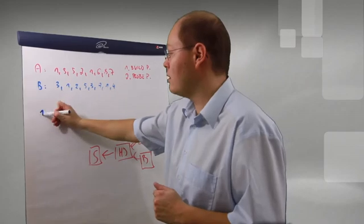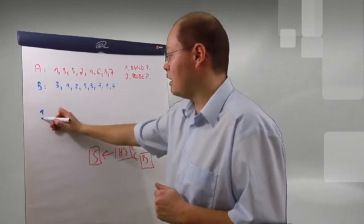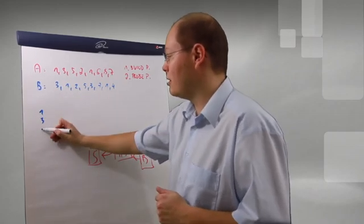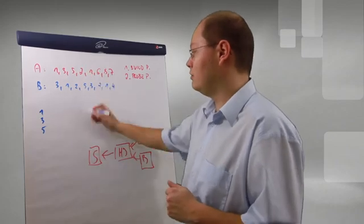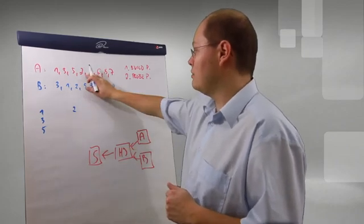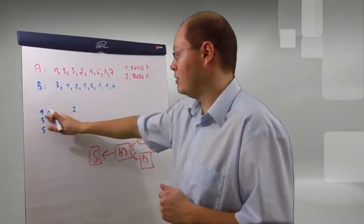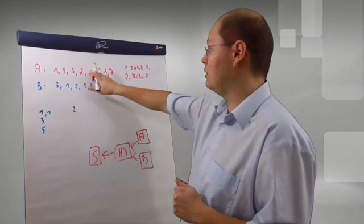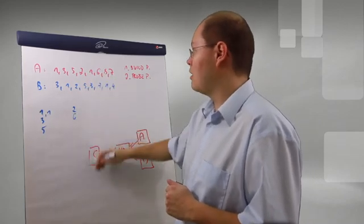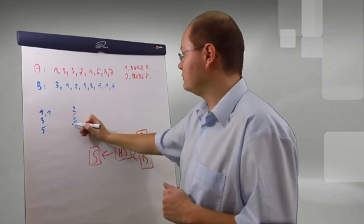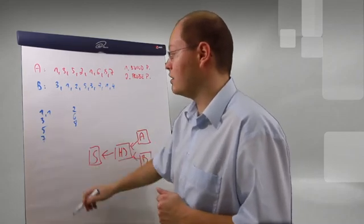As you can see, we have a 1 with value of 3, uneven, value of 5, uneven, value of 2 is even. Value of 1 we have it already here. This is a so-called hash collision. Value of 6, value of 8, and value of 7 uneven.